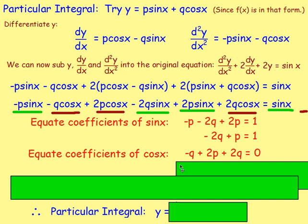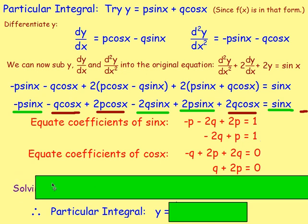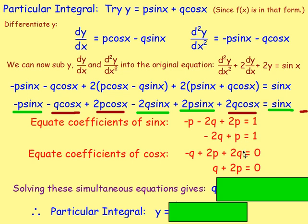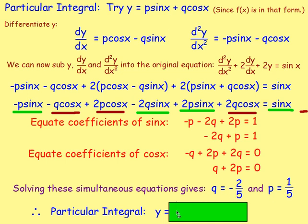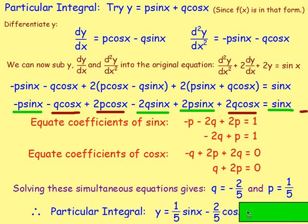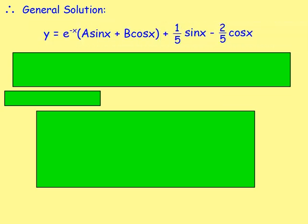With p = 1/5 and q = −2/5, the particular integral is (1/5)sin x − (2/5)cos x. The general solution is the complementary function plus the particular integral: y = e^(−x)(a sin x + b cos x) + (1/5)sin x − (2/5)cos x.